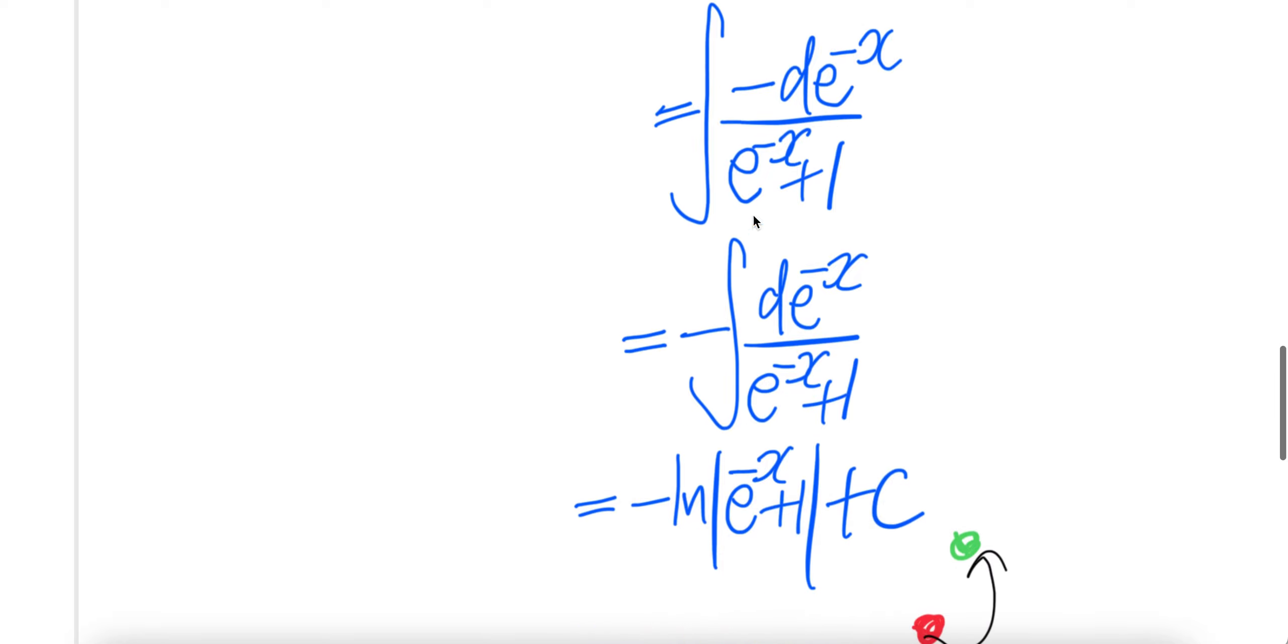Again, this is a simple integral. The integral of this is ln absolute e to the power negative x plus 1. Don't forget the minus here. Plus c.